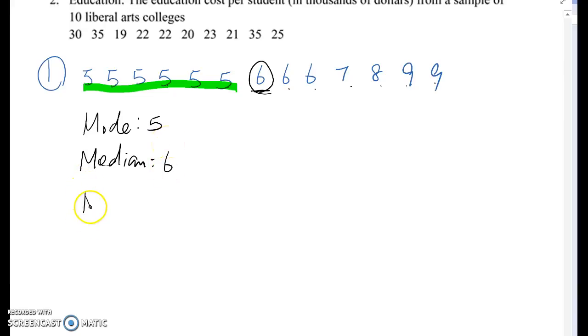Now, mean. Finding mean, you need to combine all the data and divide by number of data. So mean will be 81 over 13. Therefore, the answer becomes 6.23.